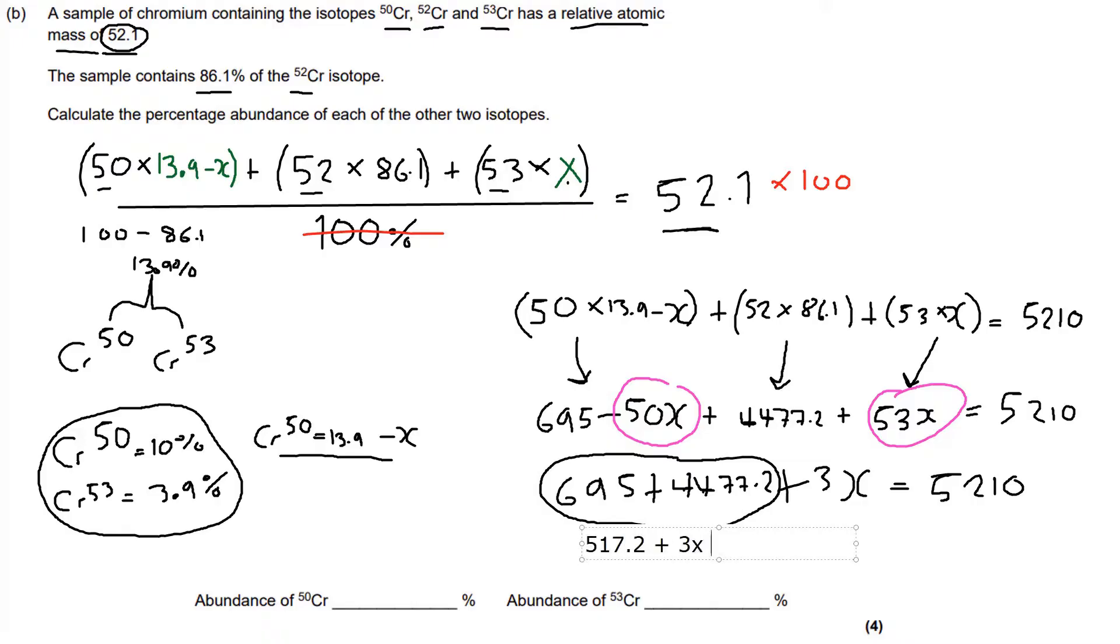I should have typed ages ago. This was so dumb of me to try and handwrite this. Yeah, 5172.2. Okay. Now what we need to do is 3x equals 37.8 because we divide 3x and we get 12.6.